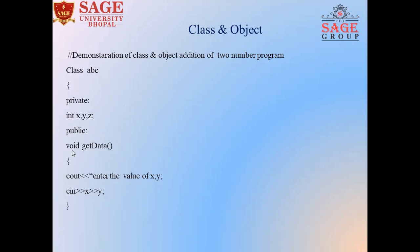In the public section, we write member methods. The first is void get_data — this is a member method, and the name depends on the user. void is the return type. We open the body of the member method with curly brackets. Inside, we display a message to enter the values of X and Y, and we take input from the user via console input, entering X and Y values for addition. Then we close the body of the get_data member function.